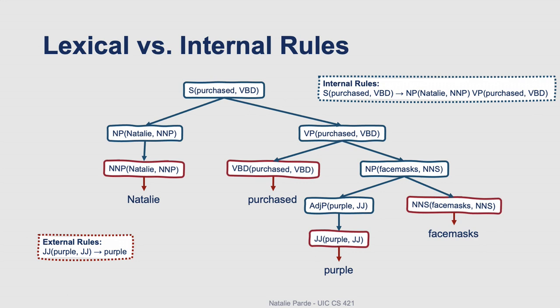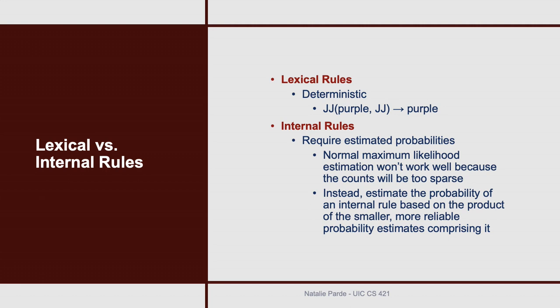A key difference between lexical and internal rules is whether they require estimated probabilities. Lexical rules are deterministic — basically, if we have a rule like what you see here, it's always going to generate the same word, so the probability of that happening would be 1.0. On the other hand, internal rules do require estimated probabilities, and getting these is easier said than done. We can't just apply normal maximum likelihood estimation because with so many possible rules, the counts from even a large corpus would be really sparse. So instead, we have to estimate the probabilities of our internal rules by combining smaller, more reliable probability estimates associated with their constituents.